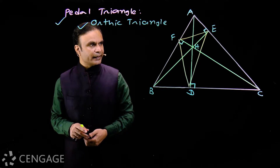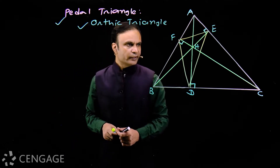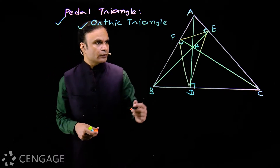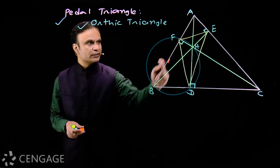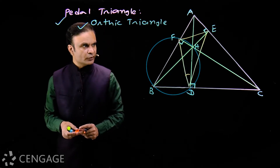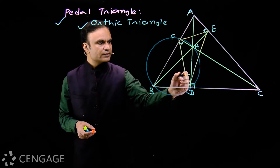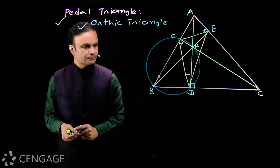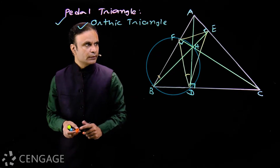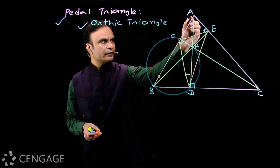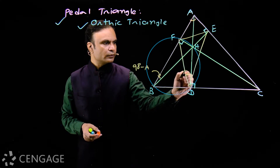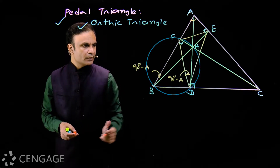Now let's get the sides and angles of the pedal triangle. Notice sets of four cyclic points in this figure. Points B, F, H, D are concyclic. Chord FH will subtend the same angle at point D and at point B because these four points are concyclic. From right triangle AEB, this angle is 90°, angle A gives the other angle as 90° − A, so this angle is also 90° − A.